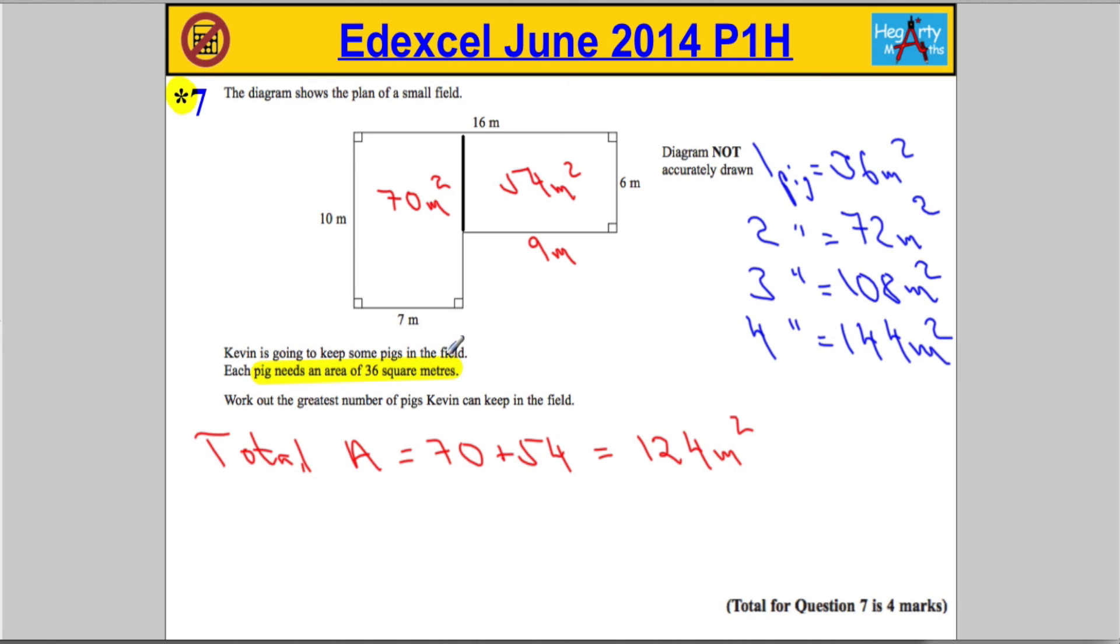Now we want the greatest number of pigs. Well, he would need 144 metres squared for 4 pigs. That means he must only be able to keep 3 pigs.